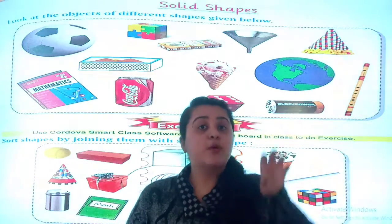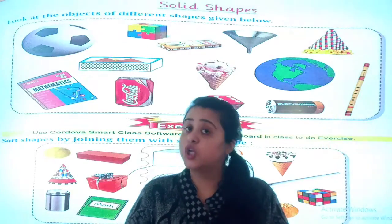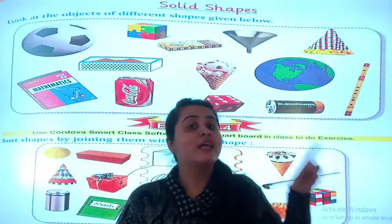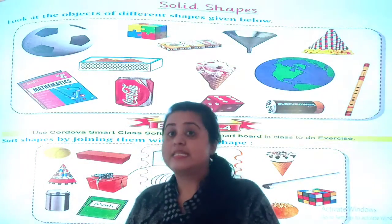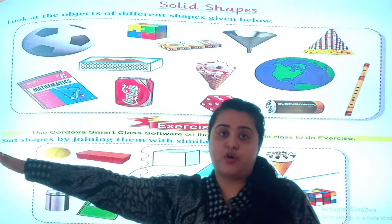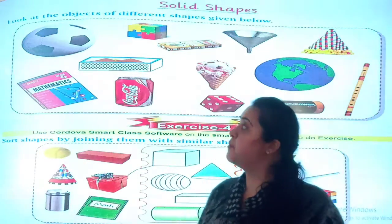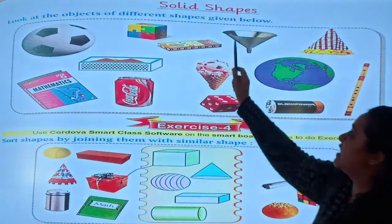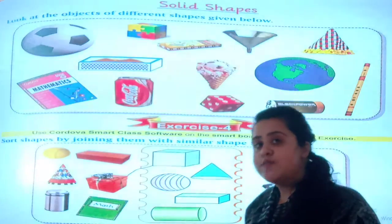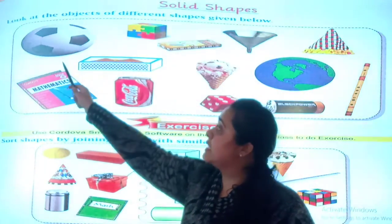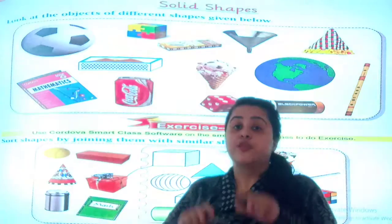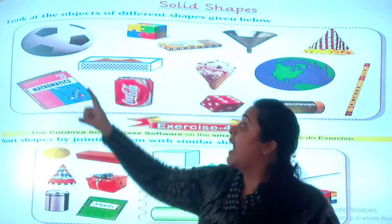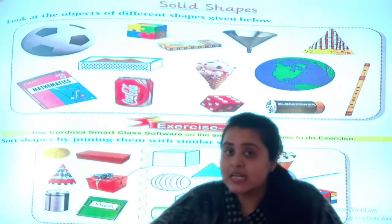Here are some examples given for the solid shape. Look at the objects of different shapes given below. We have to look and observe them. This is a football. If you touch it, does its shape change? No. And this football is circular in shape.